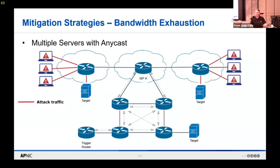An improvement is hosting your servers in multiple locations using Anycast — specifically Anycast, because local attack traffic will be kept local to the destination of the physically closest server. Here you can see internet providers on both left and right hosting one of your target services, and botnets that connect locally to those providers will not transit across through ISP A. The attack traffic, because it's Anycast, will go to the closest server.